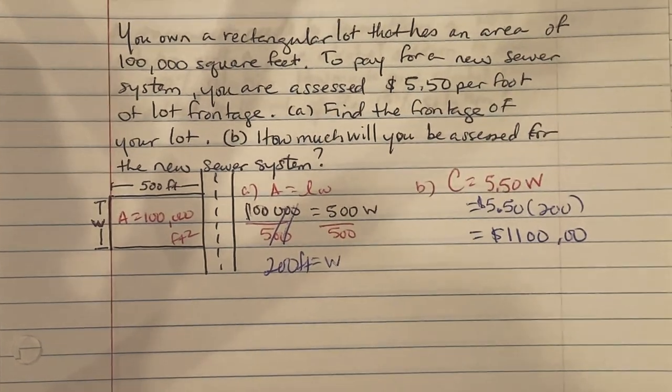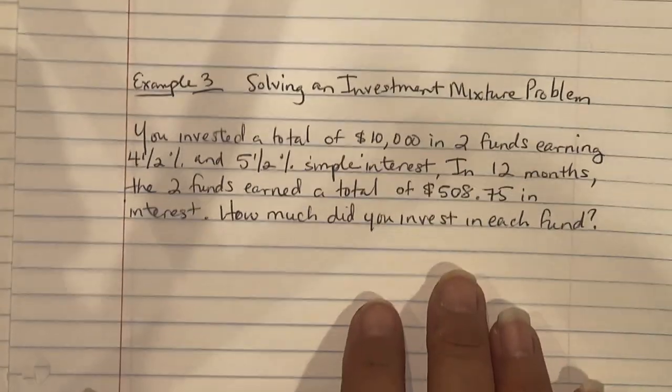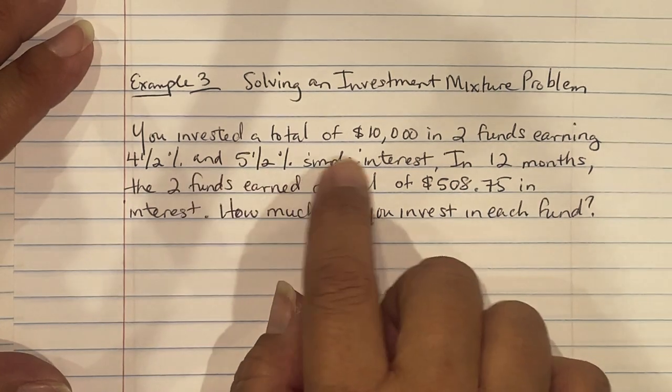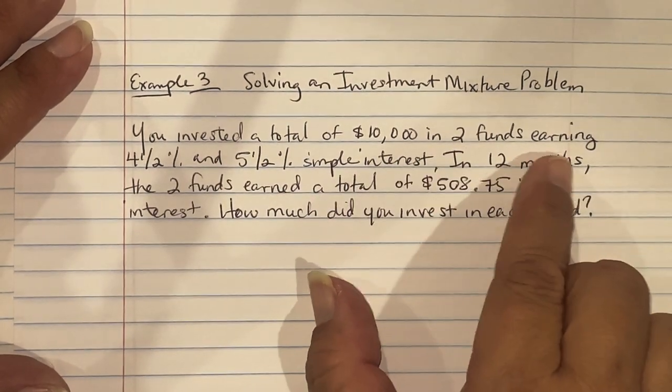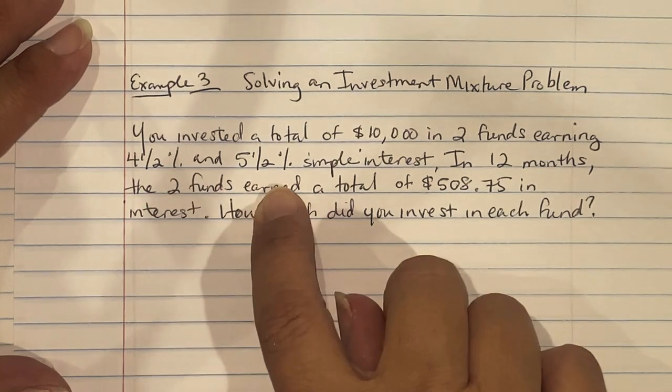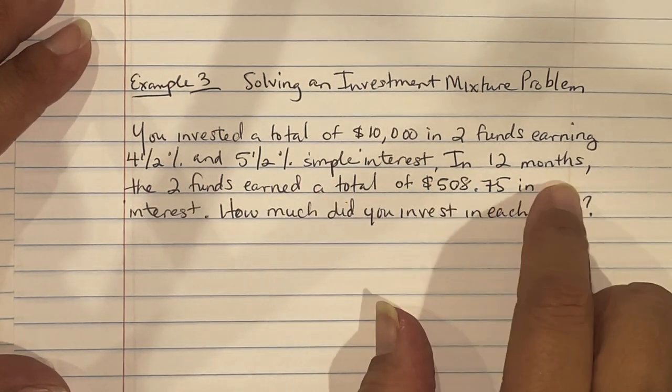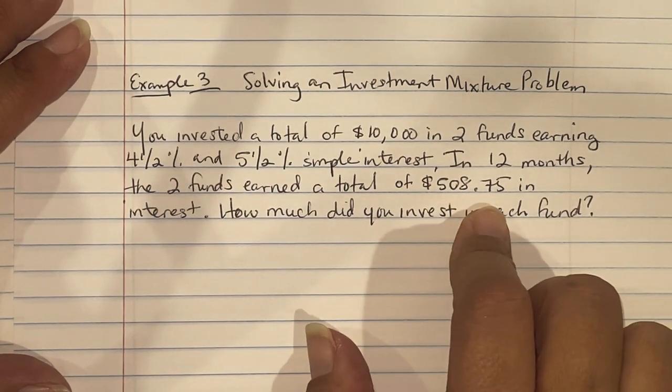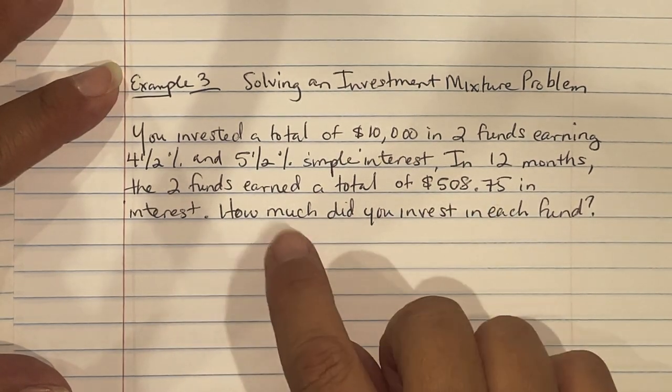Example 3, solving a simple investment mixture problem, says you invested a total of $10,000 in two funds earning 4.5% and 5.5% simple interest. In 12 months, the two funds earned a total of $508.75 in interest. How much did you invest in each fund?